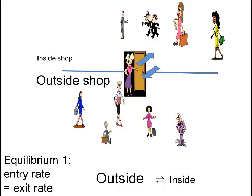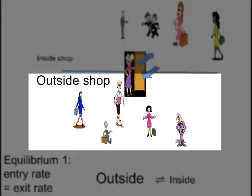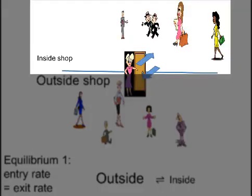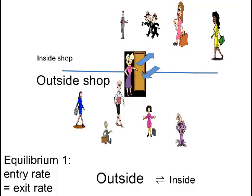Let us imagine we have a shop which happens to experience equilibrium on a certain day when there are many more people outside the shop than inside the shop. The shop is in equilibrium in that just as many people enter the shop as leave the shop during a certain time.